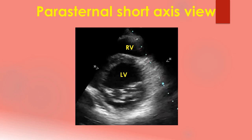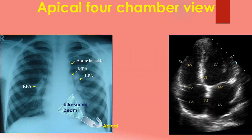Planimetry of mitral valve area can be obtained in the parasternal short axis view in cases of mitral stenosis. Apical views are obtained by keeping the transducer directly over the apex beat. Apical 4-chamber, 2-chamber and 3-chamber views can be obtained by rotating the transducer. The apical 4-chamber view shows all four cardiac chambers, the mitral and tricuspid valves and the septa. However, as the echo beam is parallel to the interatrial septum, false echo dropouts can occur in the interatrial septum. An apical 5-chamber view including the proximal aorta can be obtained by a slight tilting of the transducer from this view.